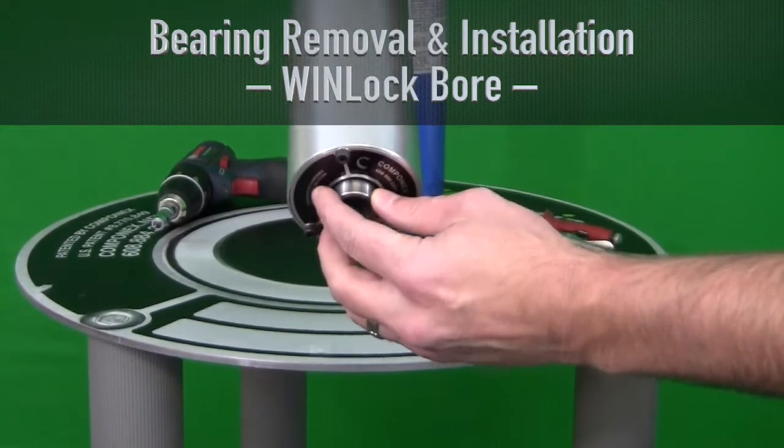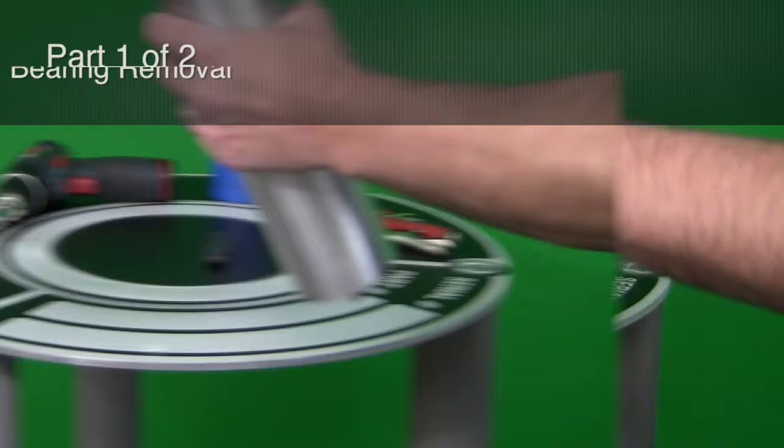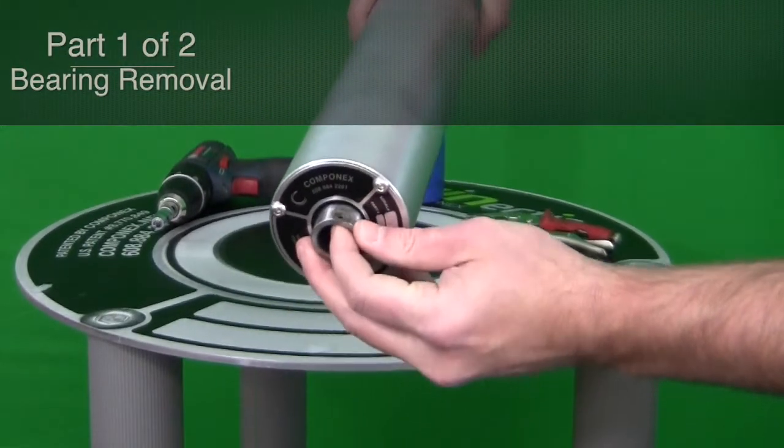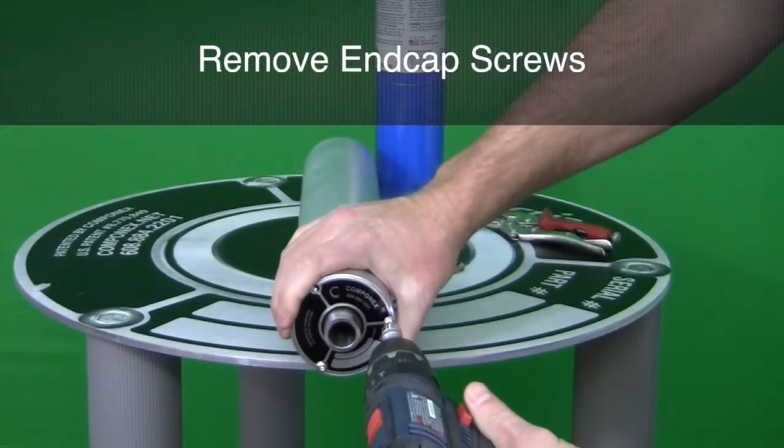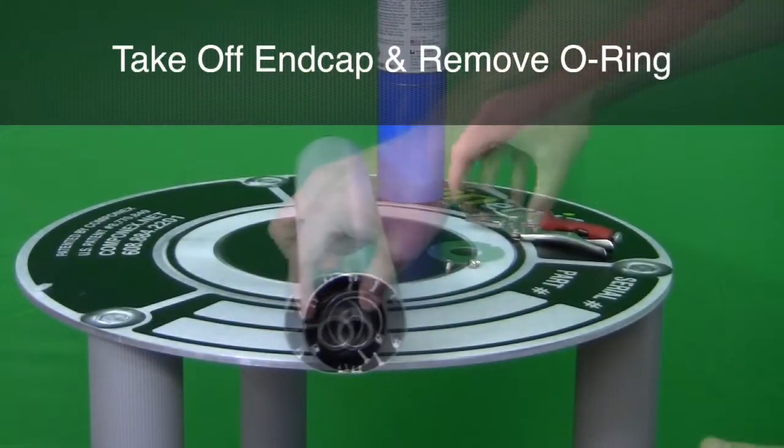Bearing Removal and Installation for the Windlock Bore. Bearing Removal. Take the set screws out of the bearings. Remove the end cap screws from the end of the roller. Take off the end cap and remove the O-ring.